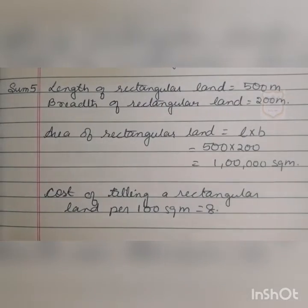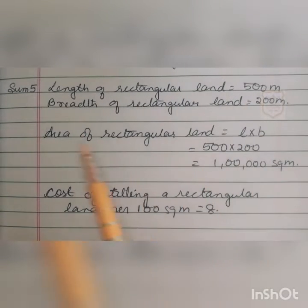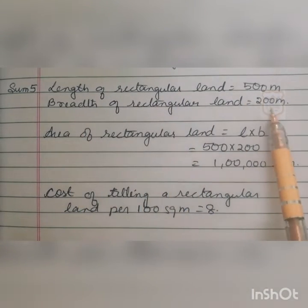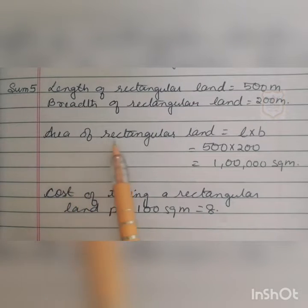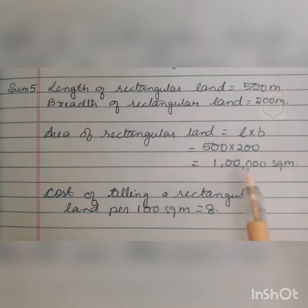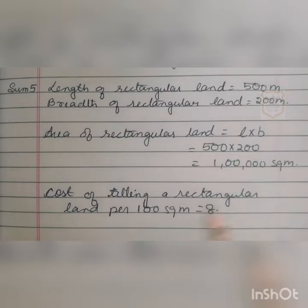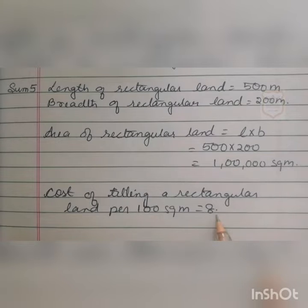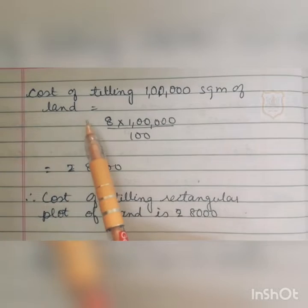The length of the rectangular land is 500 meters and the breadth is 200 meters. So the area of the rectangular land is L × B, that is 500 × 200, giving 1 lakh square meters. The cost of tiling per 100 square meters is 8 rupees.